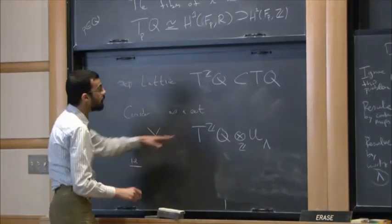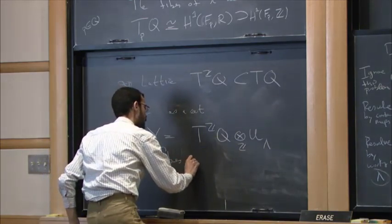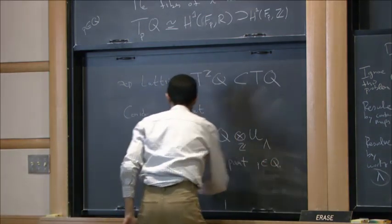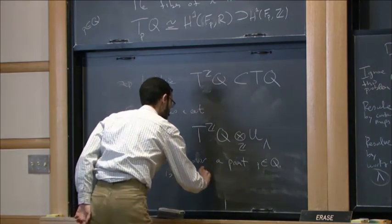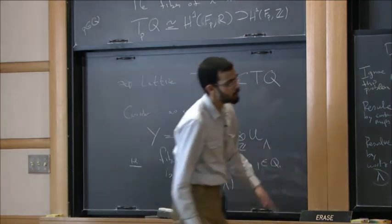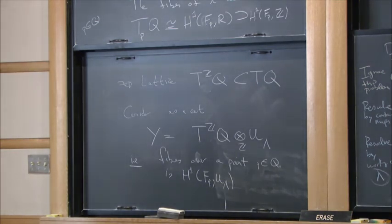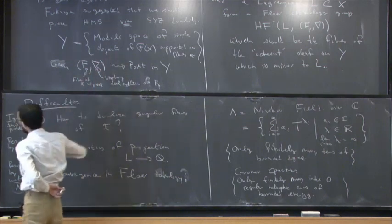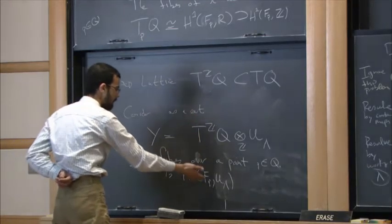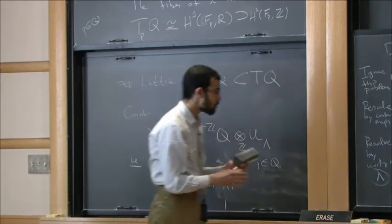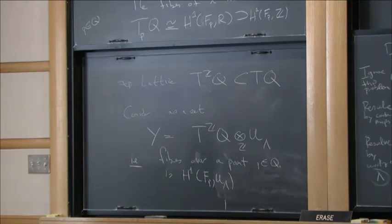In other words, the fiber over a point p is H^1(F_p; U(λ)), which — going back to what I said earlier — is the kind of data I can put on F_p so that I can then take Floer homology of F_p with any Lagrangian. So that's how you make this idea precise in this setting: you don't have to talk about moduli spaces of objects in the Fukaya category; you can just talk about these fibers equipped with local systems. But right now it's just a set.